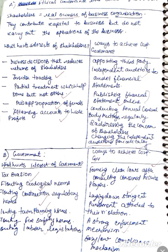Now, what issues can hurt stakeholder interests? We have to make decisions that affect the economy. First, we have to address speculation and manipulation of the share market.